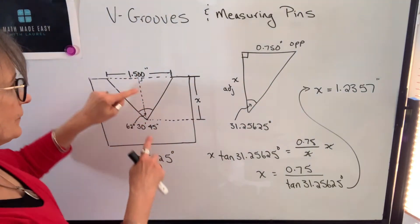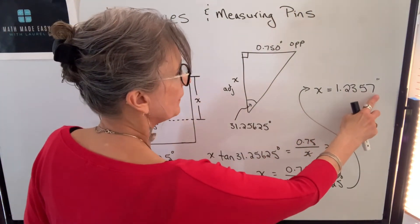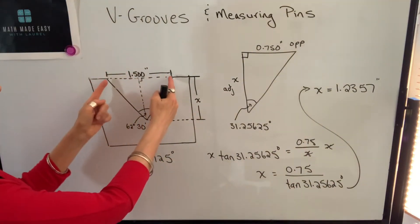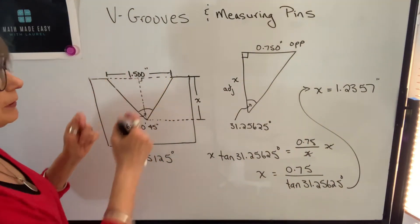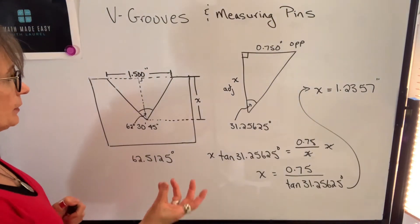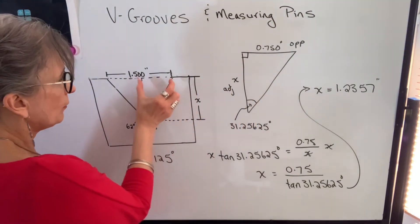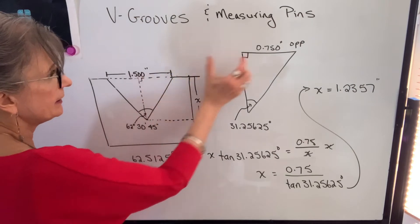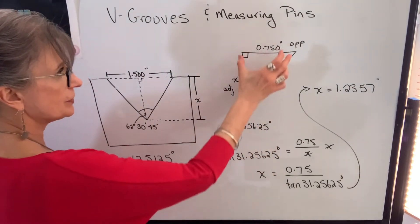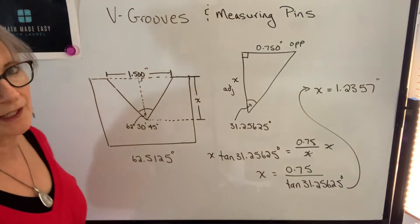Therefore, the height of the V-groove is 1.2357 inches. If I knew the height and wanted to find the width at the top of that V-groove, I would do something very similar, except I would know this length. I would still use my tangent function to find that length, and then I would double it to get the total width.